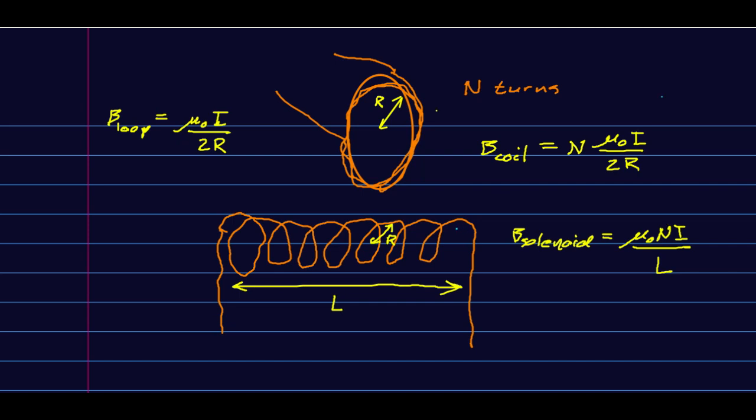The one remaining thing about a solenoid that's really convenient is that the B field inside a solenoid is very uniform. It doesn't vary much as you move from side to side or along the solenoid as long as you stay well away from the ends.